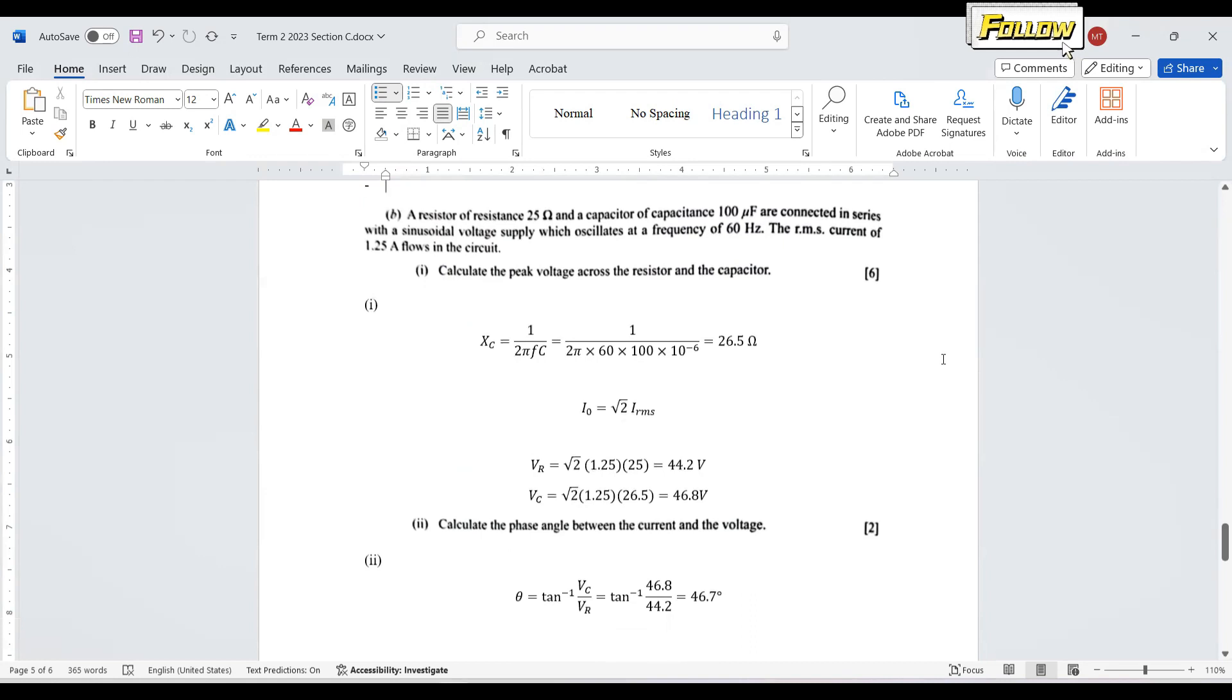A resistor of resistance 25 ohm and a capacitor of 100 microfarad are connected in series to a sinusoidal voltage supply which oscillates at a frequency of 60 hertz. RMS current of 1.25 ampere flows in the circuit. First one, calculate the peak voltage across the resistor and the capacitor.